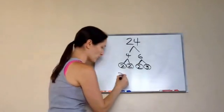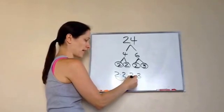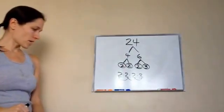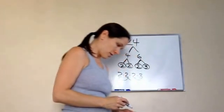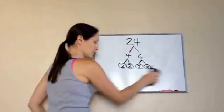So let's multiply. 2, 2, 2, 3. 2 times 2 is 4. 4 times 2 is 8. 8 times 3 is 24. So you just learned prime factorization. That is lesson 19. Good job, baby.